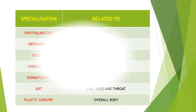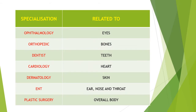After finishing MBBS, there are many specializations. Each is related to one specialization. Ophthalmology is related to eyes; orthopedics, bones; dentist, teeth; cardiology, heart; dermatology, skin; ENT, ear nose and throat; and plastic surgery, in which the overall body will be treated.